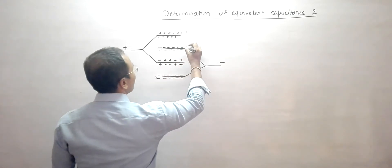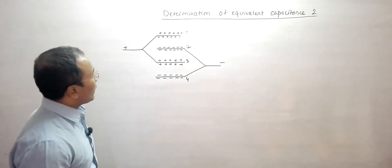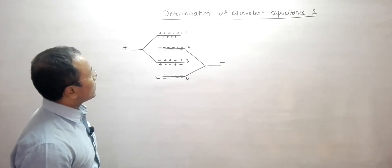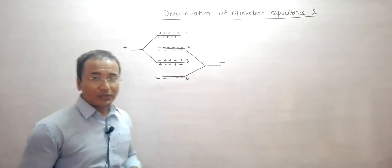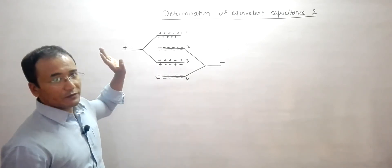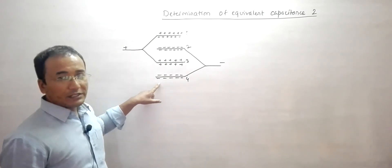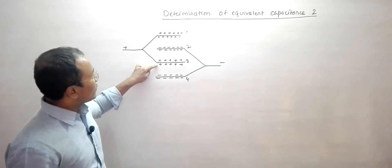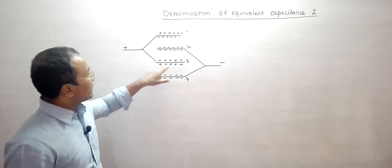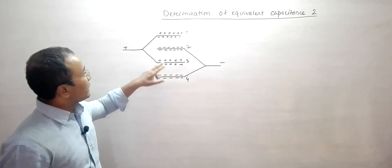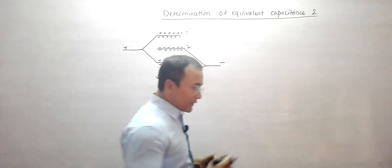Naming the plates again: 1, 2, 3, and 4. The role of plates 1 and 4 is different from the role of plates 2 and 3. Plate 1 is simply positive and plate 4 is simply negative. But plate 3 acts as a capacitor partner for both plate 2 and plate 4. Similarly, plate 2 acts as a capacitor partner for both plate 1 and plate 3 — a dual role.